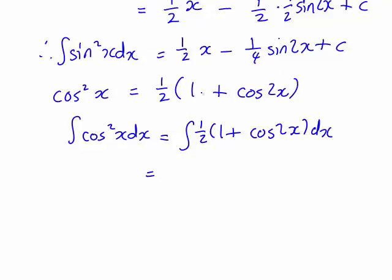Which will work out very similarly to the integral for sin squared x. As you'll notice this is very similar to the expression for sin squared x except it is 1 half times 1 plus cos 2x, whereas sin squared x was 1 half times 1 minus cos 2x. It means the integral is going to come out looking very similar as 1 half x plus 1 quarter sin 2x plus c.